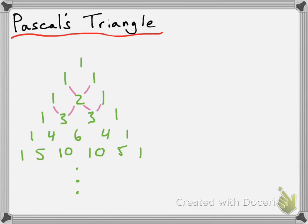Every single row here is going to have a particular number to represent that row. The very top term is not going to be row one — we're actually going to call that row zero. So that very top point is going to be row zero. The next row is going to be row one, then we have row two, row three, row four, and so on. So every row has a number starting from zero.